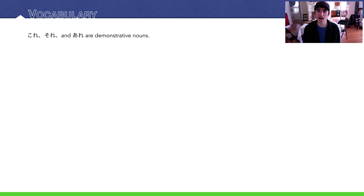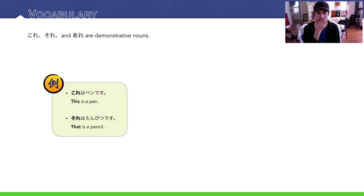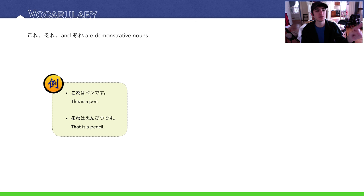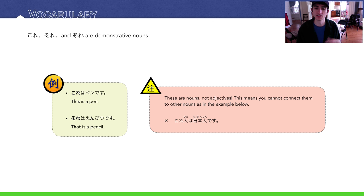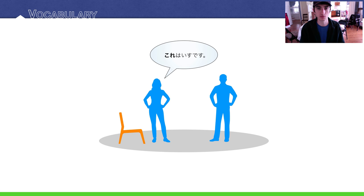Let's talk more about これ、それ、あれ. These are demonstrative nouns. We can use them in sentences like 'This is a pen' or 'That is a pencil.' These are not adjectives, so you can't use them to modify nouns like 'this person.' They are nouns, so you have to treat them on their own.